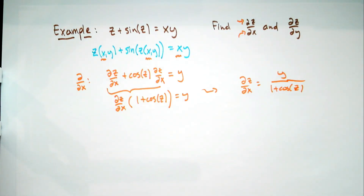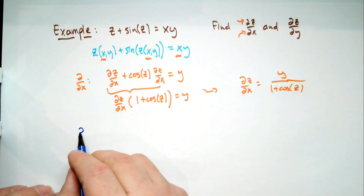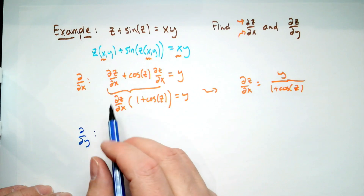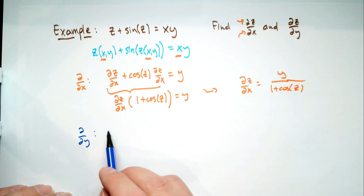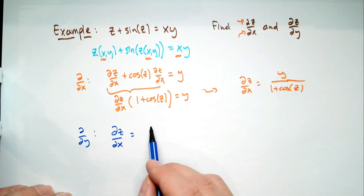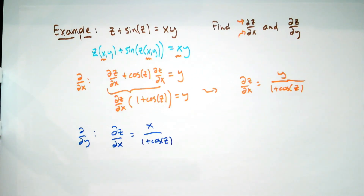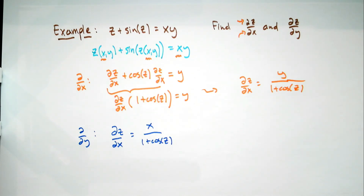That tells me: if I want to know how Z changes with respect to X and I know the current values of X, Y, and Z, I can put them together. If you do the same thing with respect to Y, almost nothing changes — it becomes partial Y's, and on the other side it becomes X. So partial Z partial Y is X over 1 plus cosine of Z. The key for implicit differentiation is always remember that one variable depends on the others, and be ready because sometimes we change symbols.